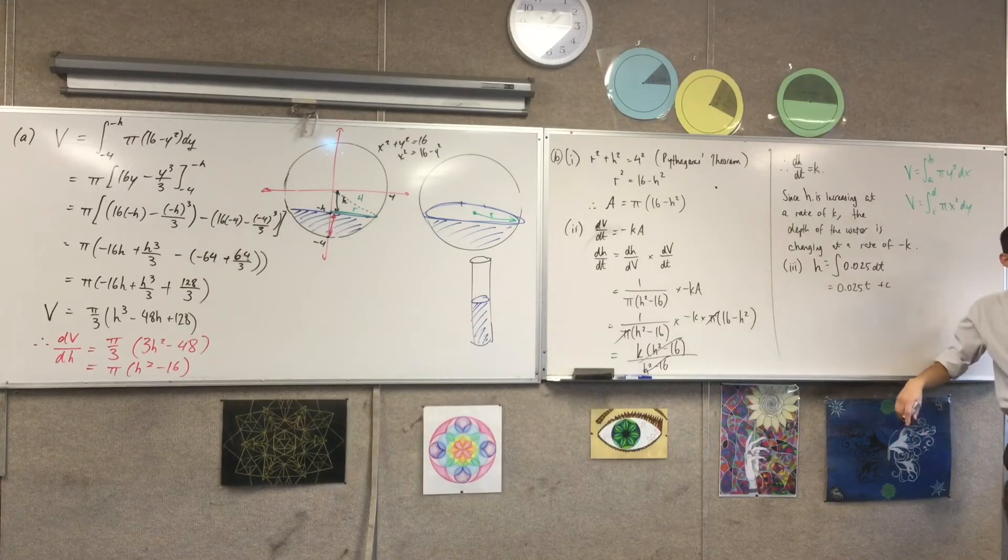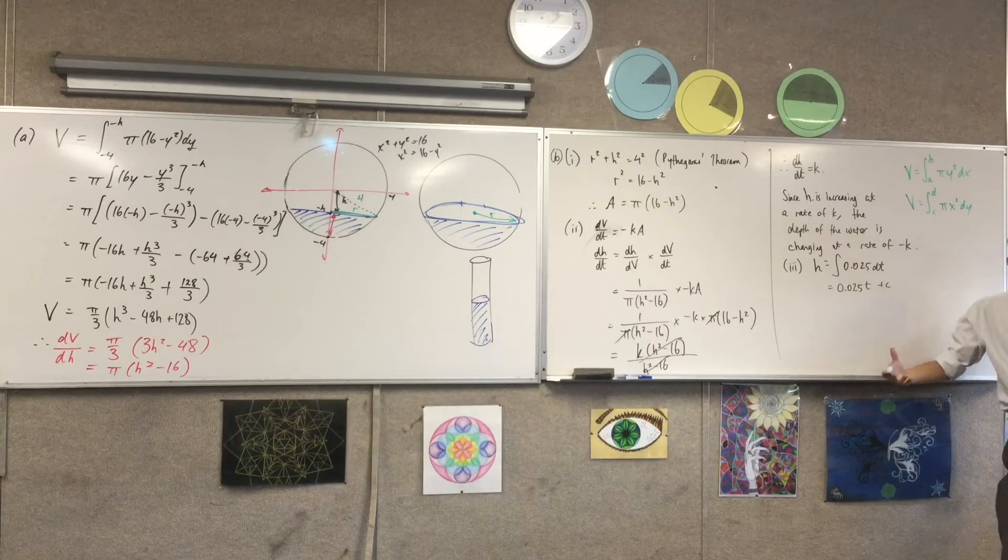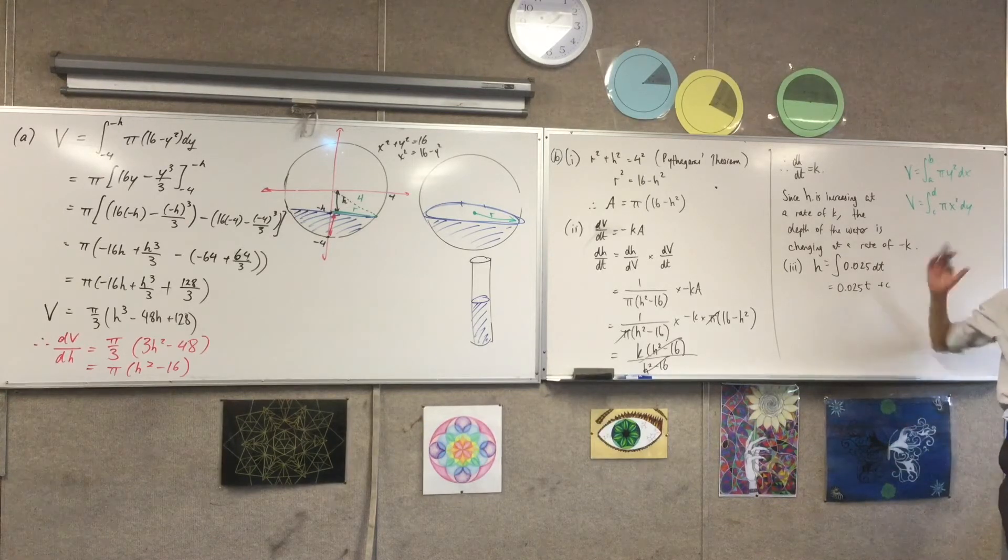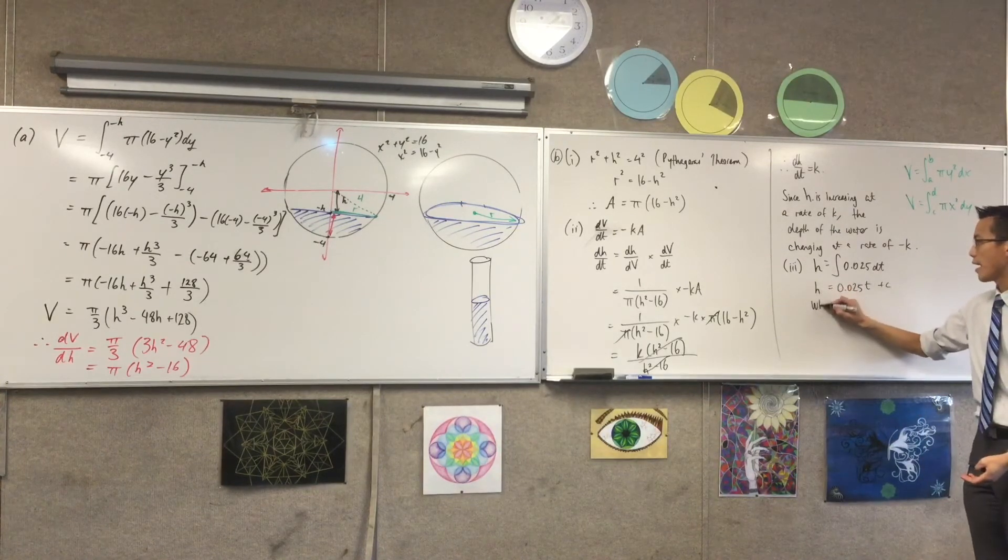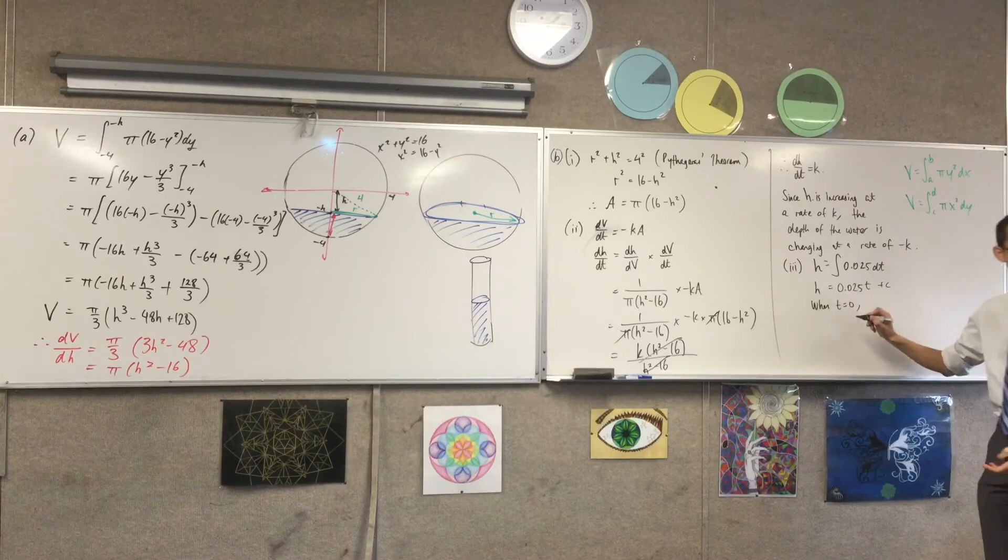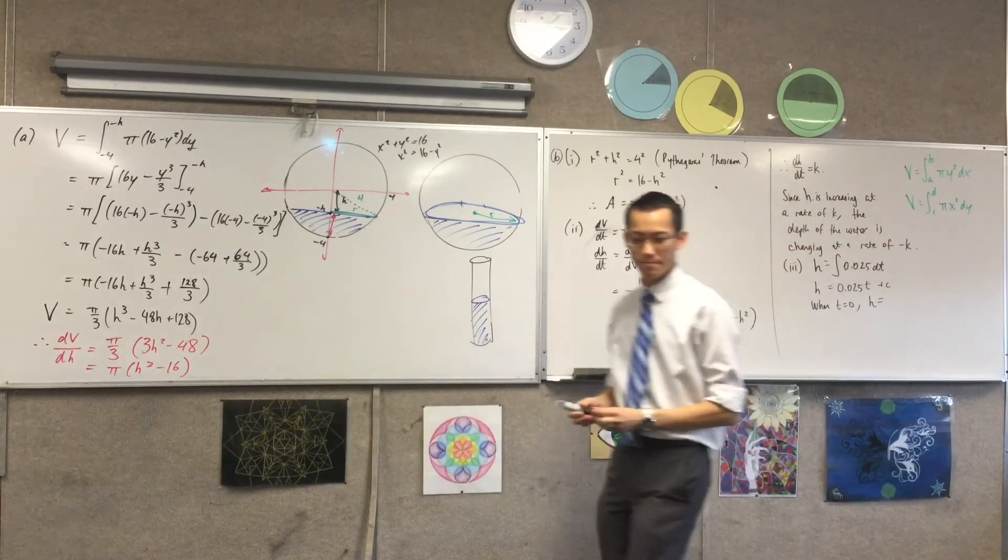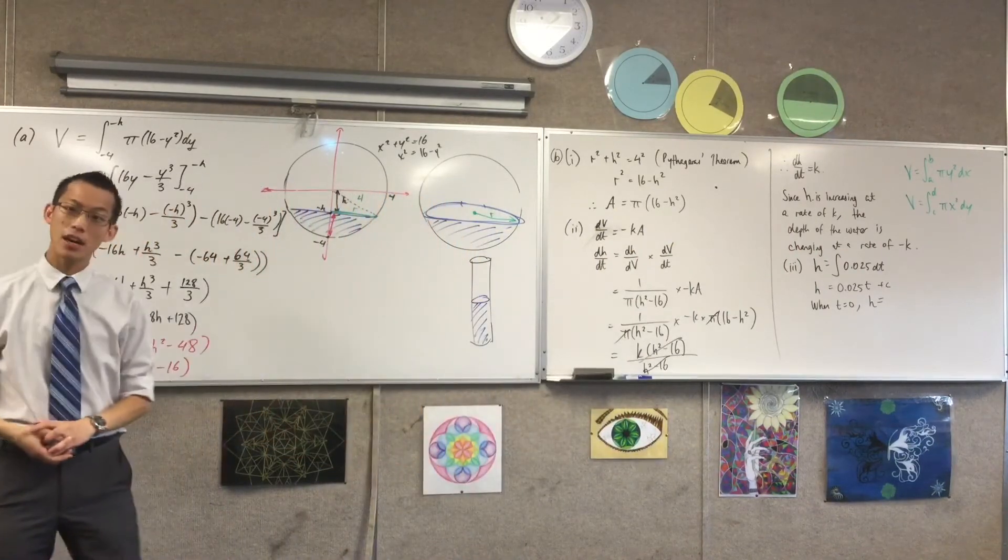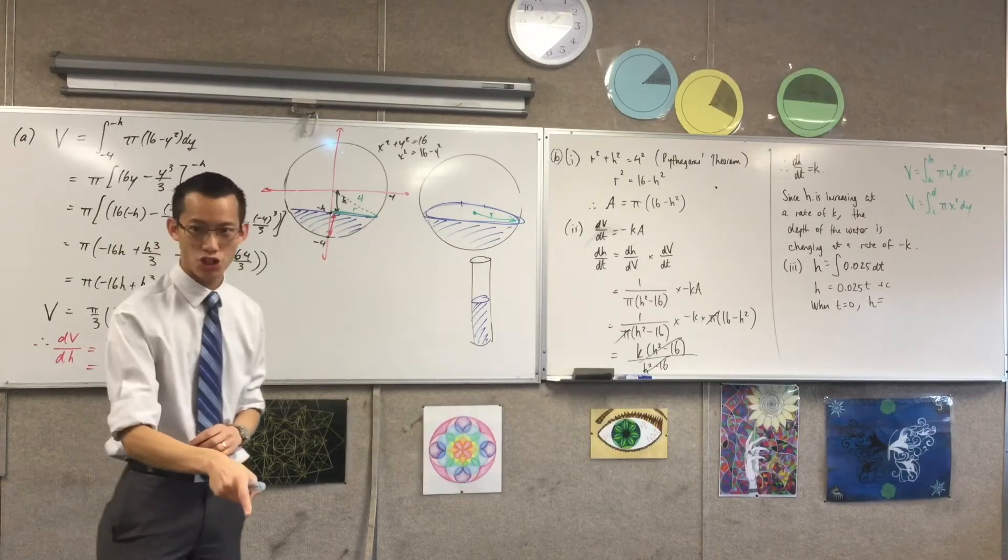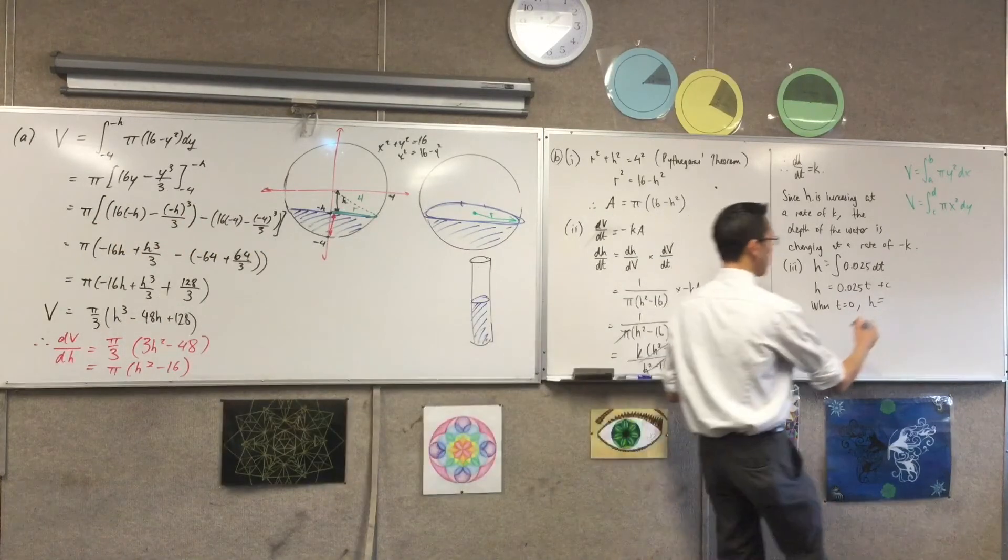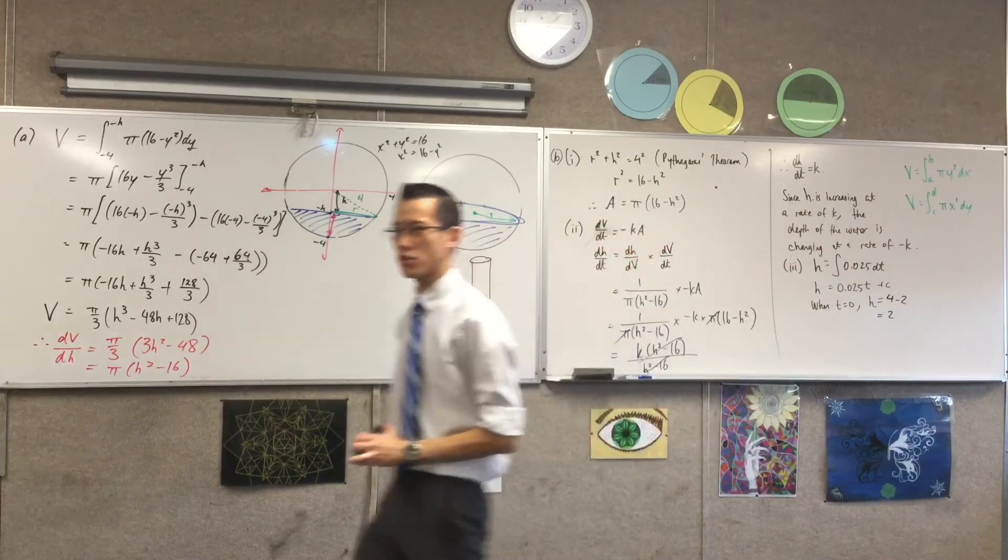So how do I work out this constant? Yeah, the question has given me information, right? The fancy way we say it is, you've been given initial conditions, right? So you can say, when t equals 0, what's h equal to? Now, you've just got to be slightly careful here. The answer is 2, but it's not 2 because the question says 2. It's 2 because 4 minus 2 is 2.